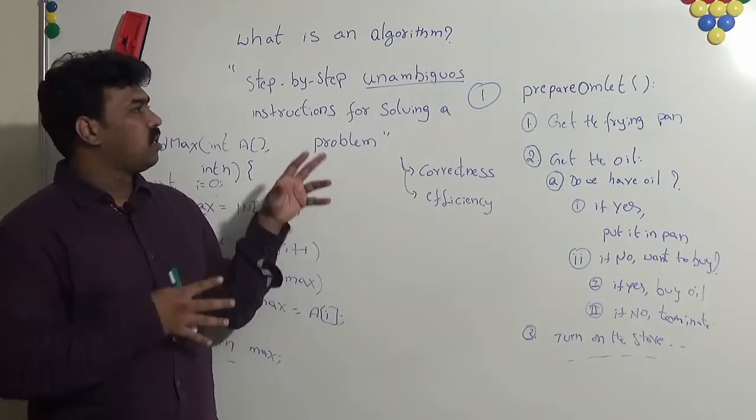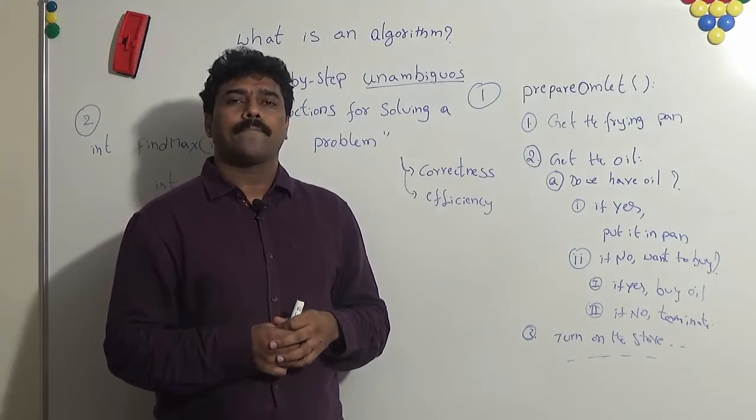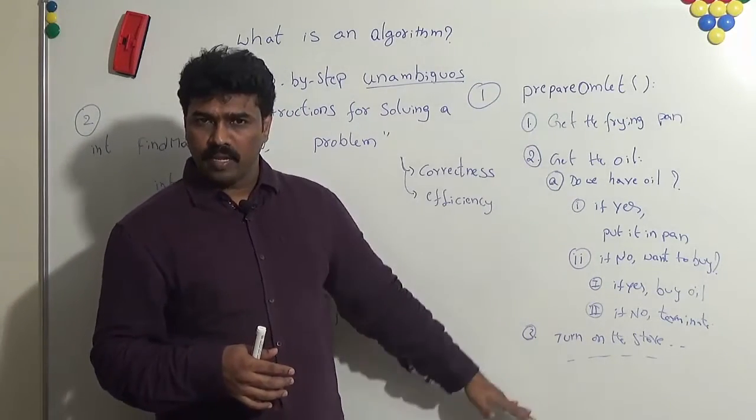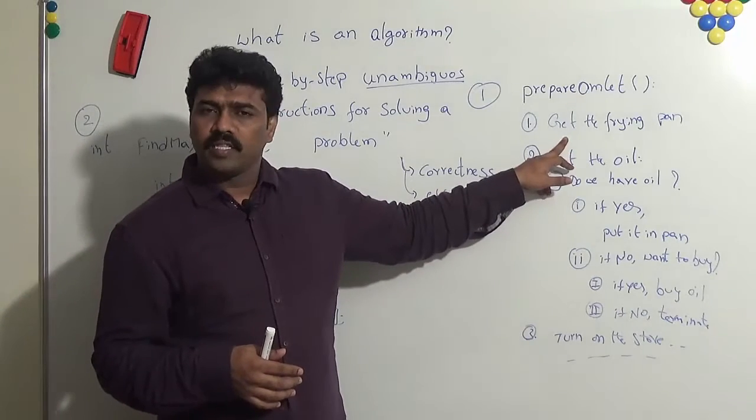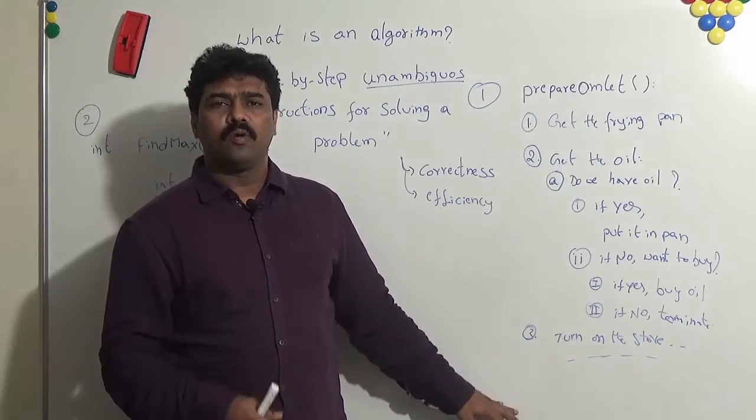Just to see some examples of algorithms, let us consider preparing an omelette. You can see that these are the instructions for preparing the omelette. First we are getting the frying pan, then we are getting the oil, then we turn on the stove. Like that we keep going.